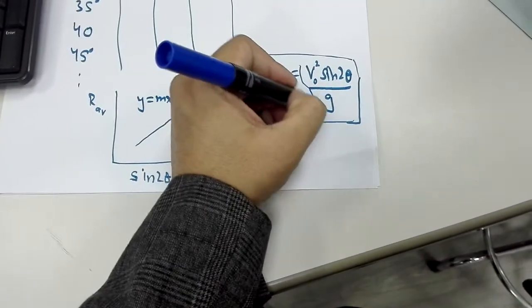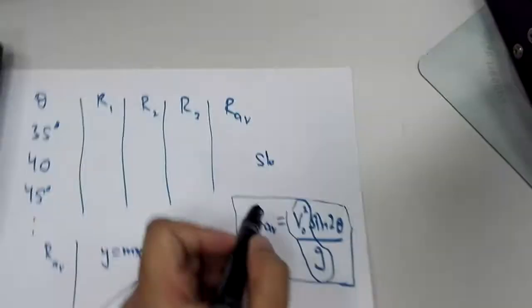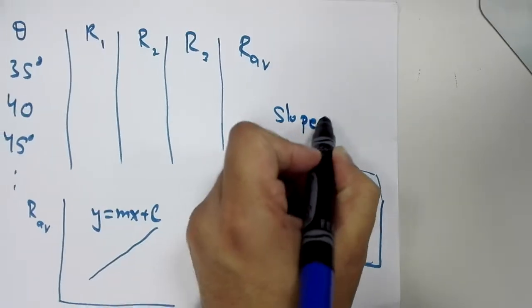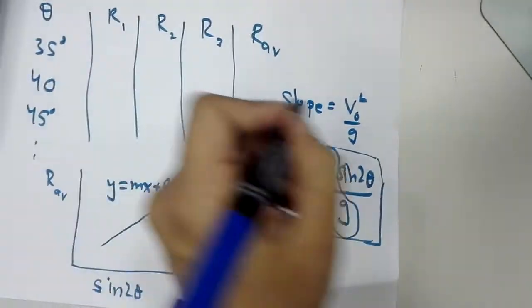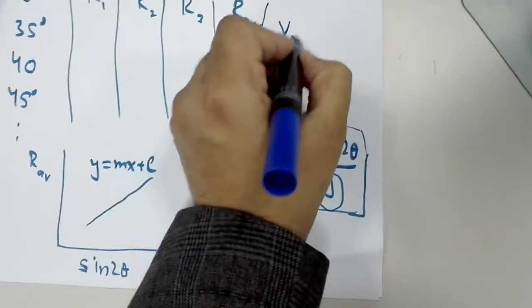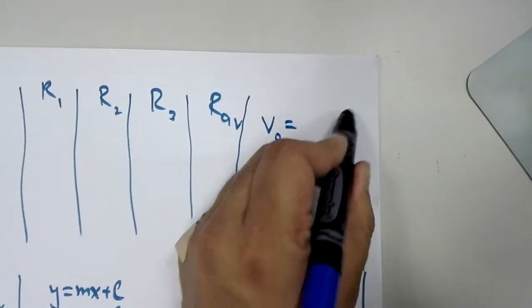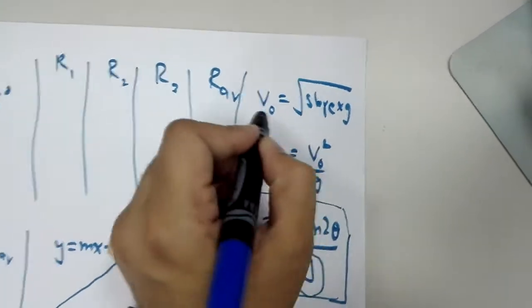the slope is going to be this thing. So you will set the slope equal to v0 squared over g, and then calculate v0. So v0 is going to be square root of slope multiplied by g. That's going to be the value v0 which you have to calculate in this experiment.